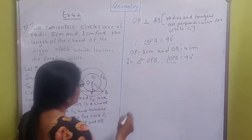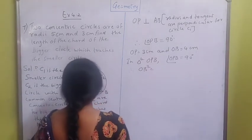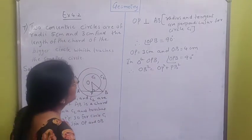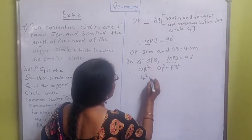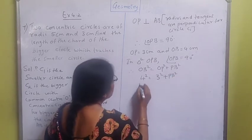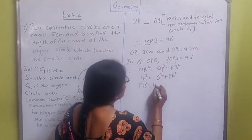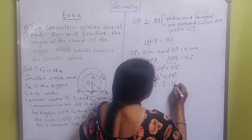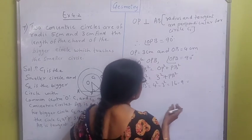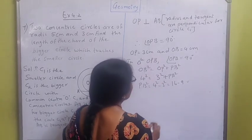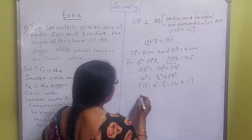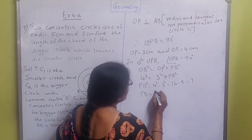Therefore, applying the Pythagoras theorem: OB² = OP² + PB². OB is already given to you - it is 4. So 4² = 3² + PB². PB² = 4² - 3² = 16 - 9 = 7. So PB² is equal to 7, therefore PB is equal to √7.